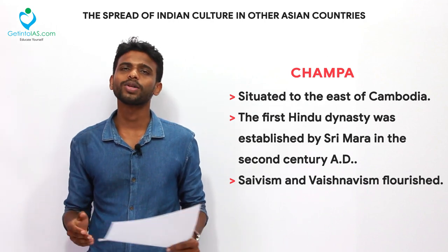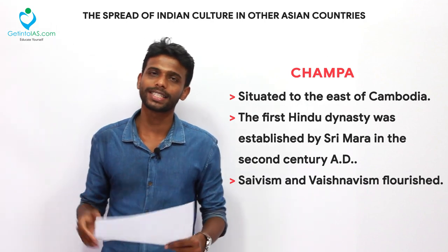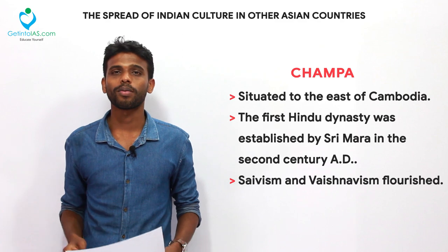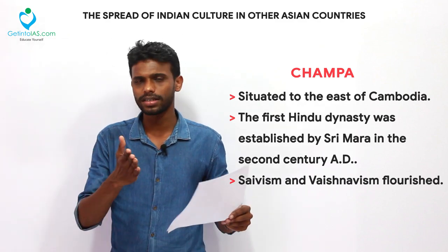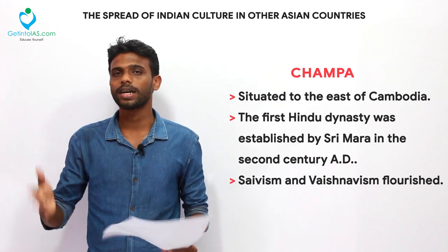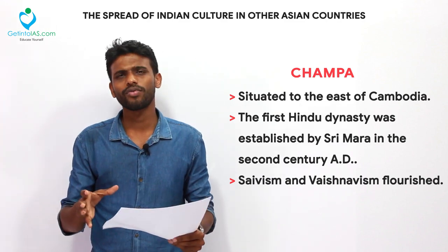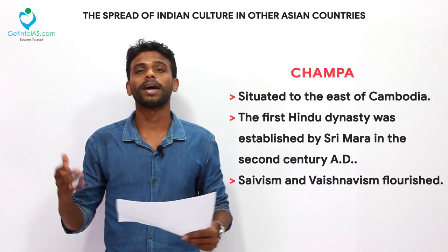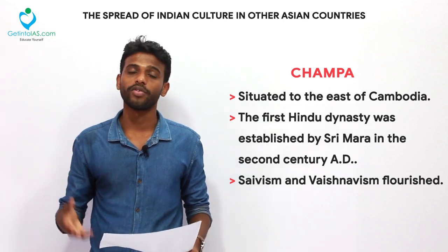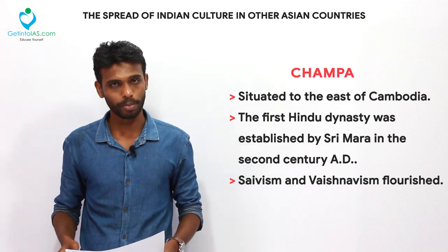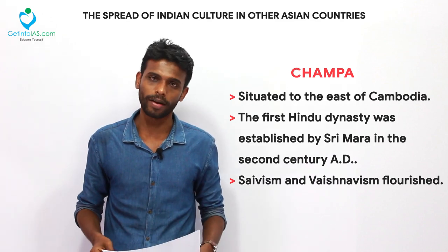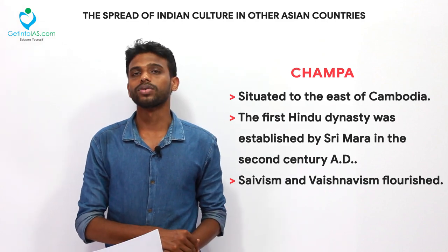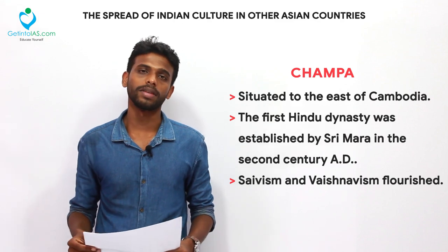Champa is located to the east of Cambodia. In the 2nd century AD the first Hindu dynasty started ruling Champa, and it existed through more than 12 dynasties. Later Champa was annexed to Cambodia. Saivism and Vaishnavism spread there, and Vedic texts, Ramayana, and Mahabharata were taught to the people. Various works on Hindu philosophy, grammar, fine arts, and astrology were written in Champa, showing India's cultural influence.